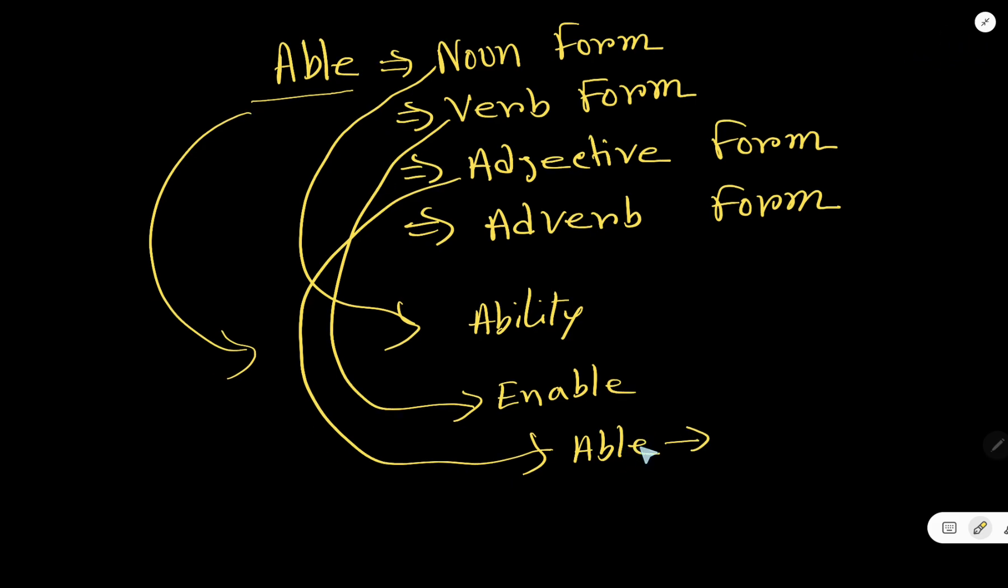The positive degree of able is A-B-L. Just you have to add S-T with the positive degree. So able, abler, ablest. Positive degree, comparative degree, superlative degree.